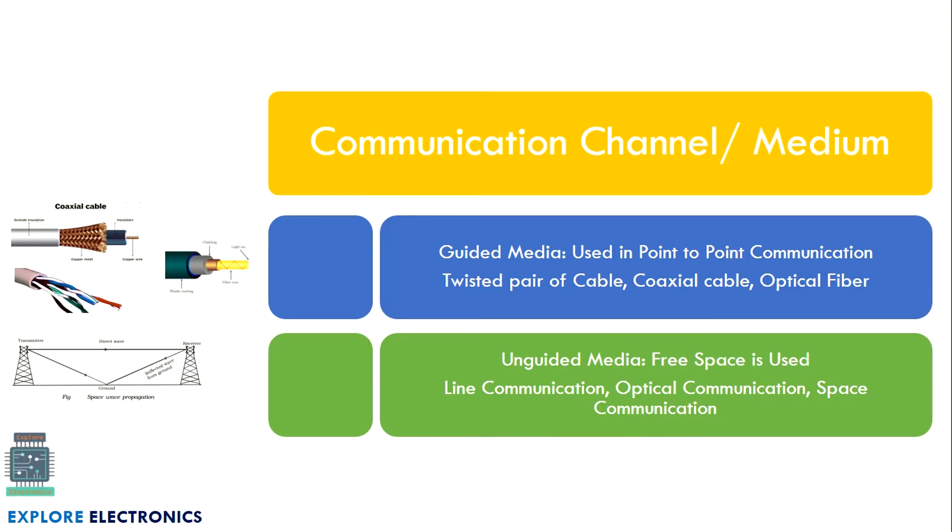First, what is a communication channel? Communication channel is the medium through which signal transmission occurs. There are two types: guided media and unguided media. Guided media uses twisted pair cable, coaxial cable, or optical fiber as a communication medium where point-to-point communication is established.